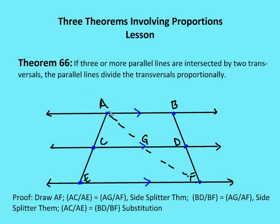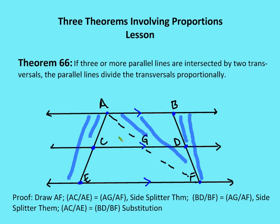By the Side Splitter Theorem, AC over CE is equal to AG over AF, and also AC over AE is equal to AG over AF. I can also say that BD over BF is equal to AG over AF. So if BD over BF equals AG over AF, and AC over AE equals AG over AF, then AC over AE must equal BD over BF. Therefore AC over CE is equal to BD over DF. Those are two proportions we can get from this proof.